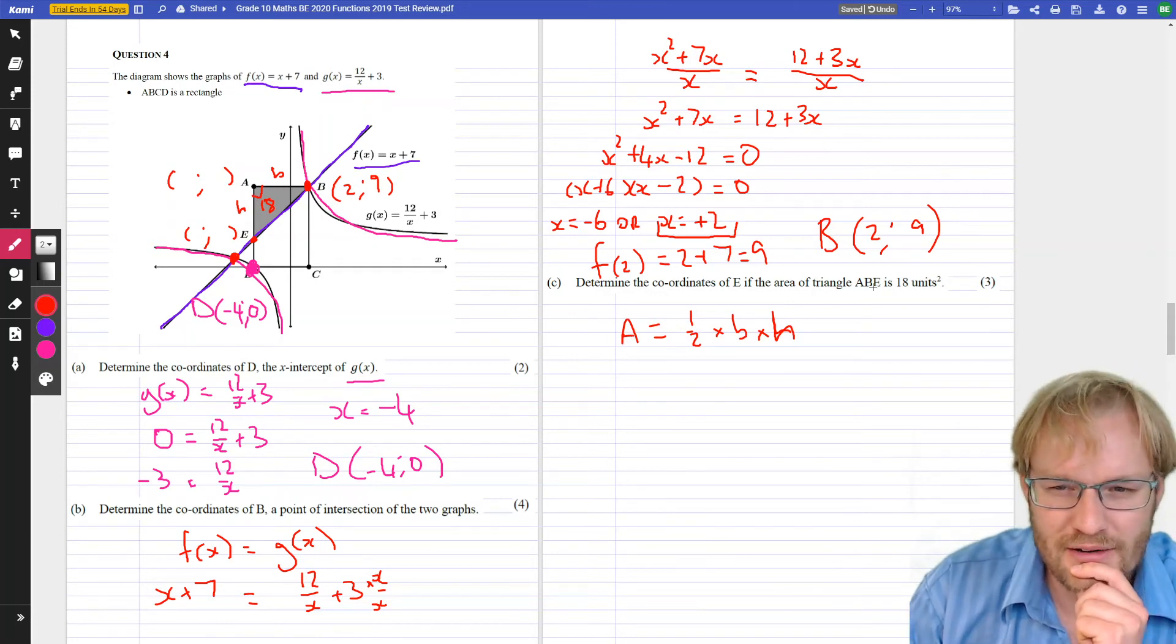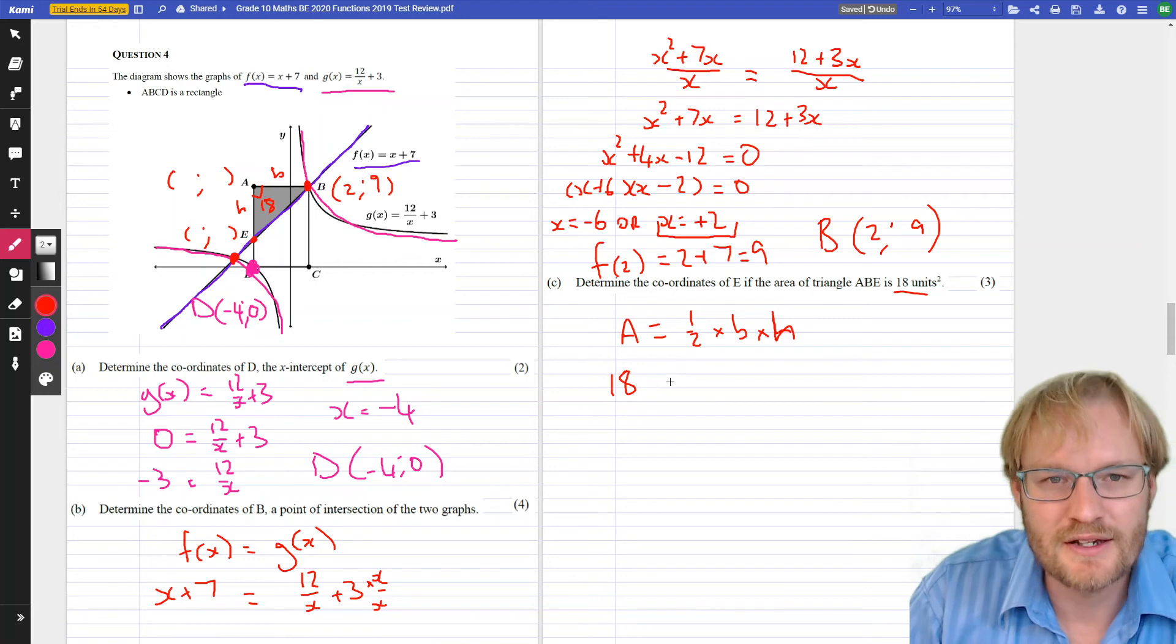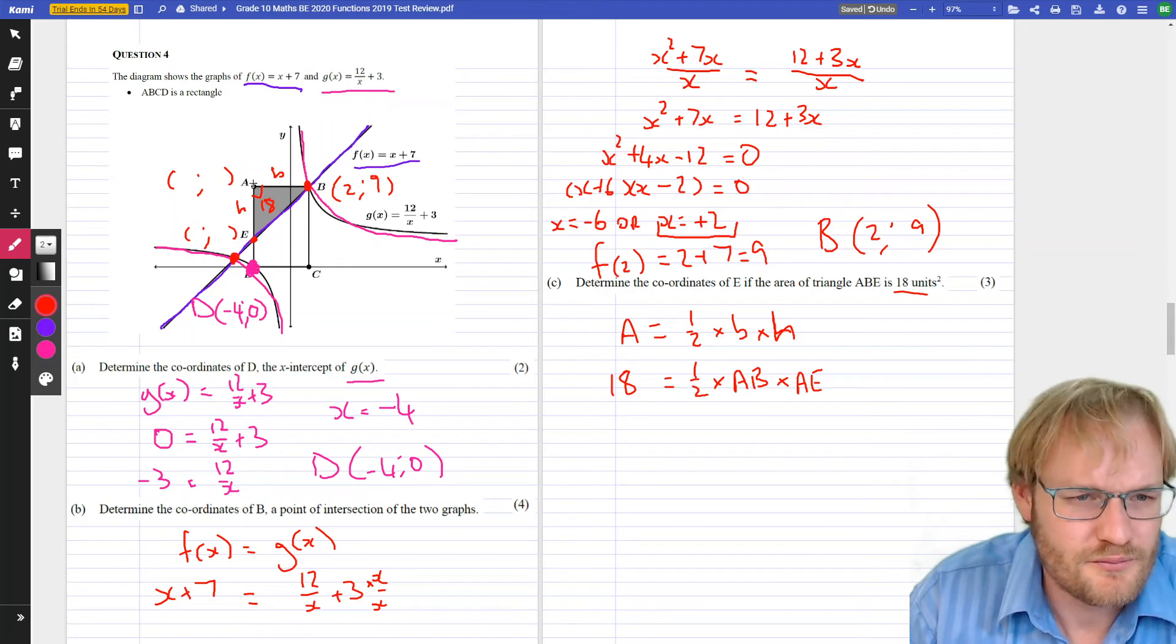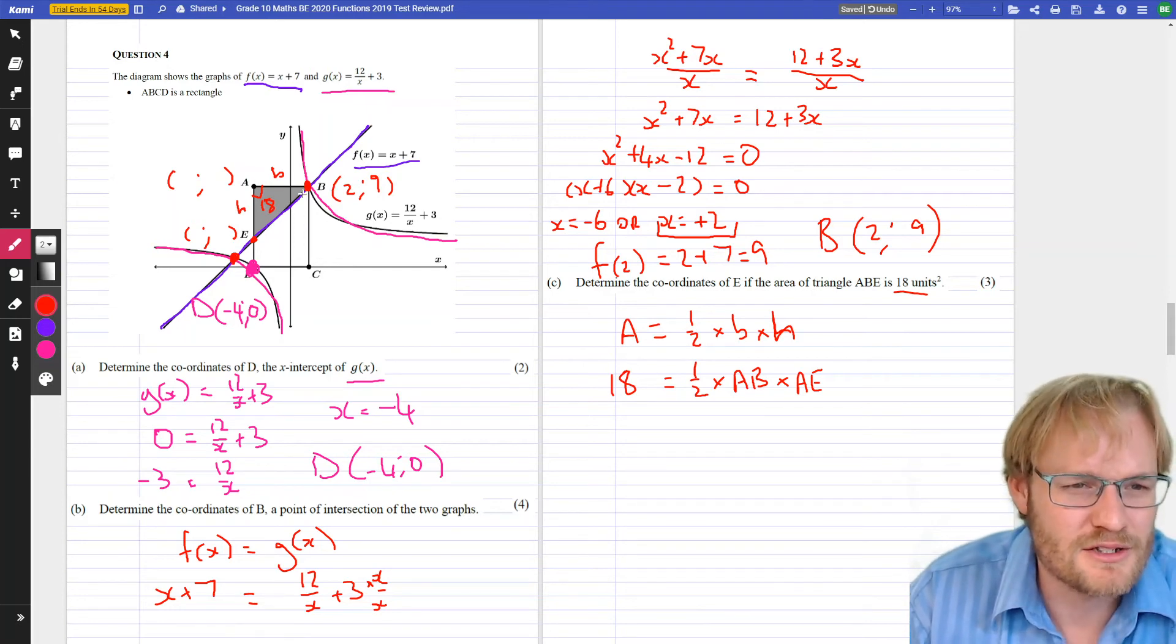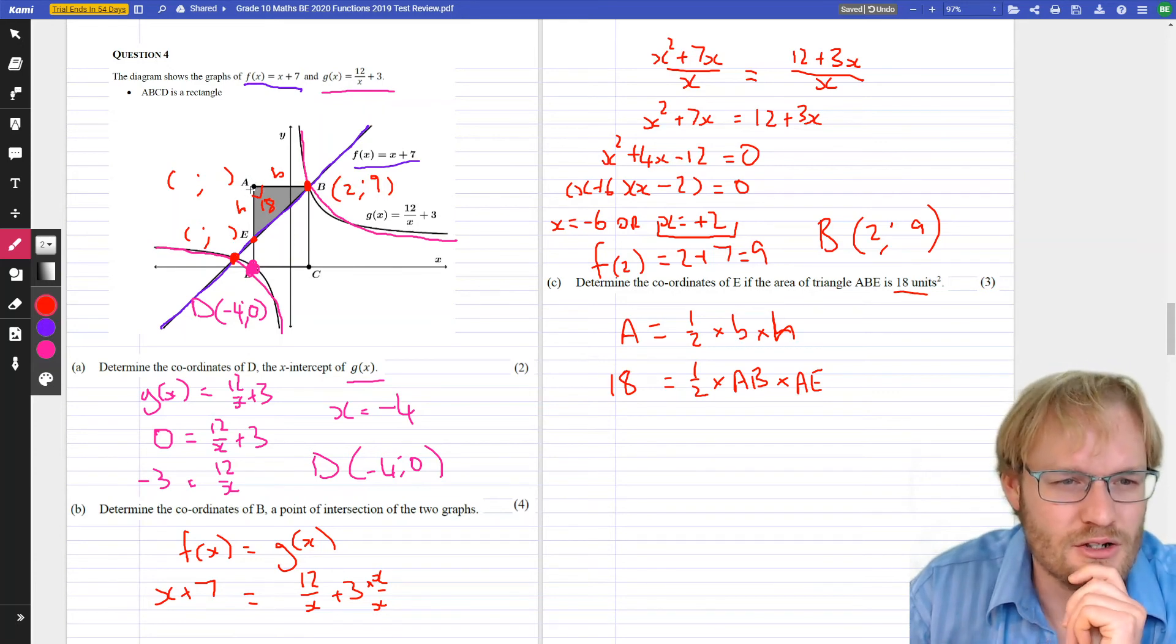So, the area, 18 equals a half times the base AB times the height AE. AB, no idea what that distance is. If we knew what A was, that would be helpful. So, let's look. The X value of A, how far left has it gone? Is there anything else in line with it?